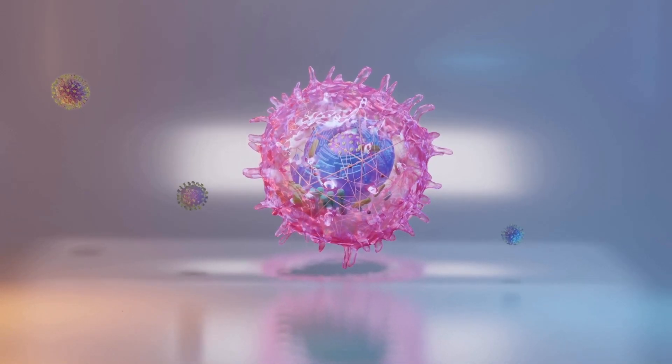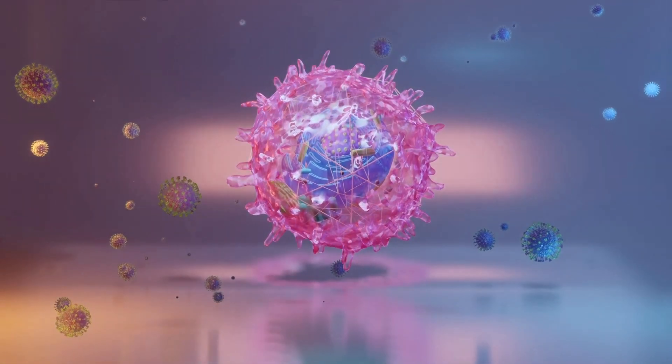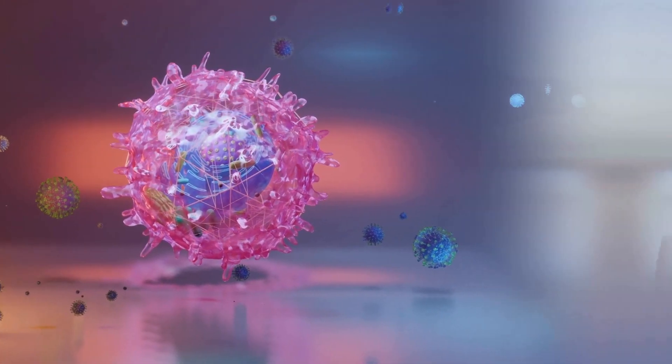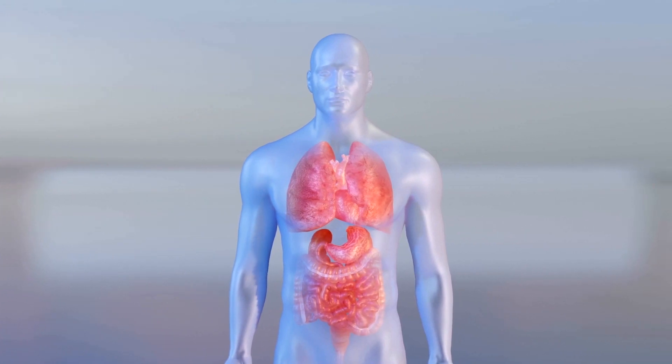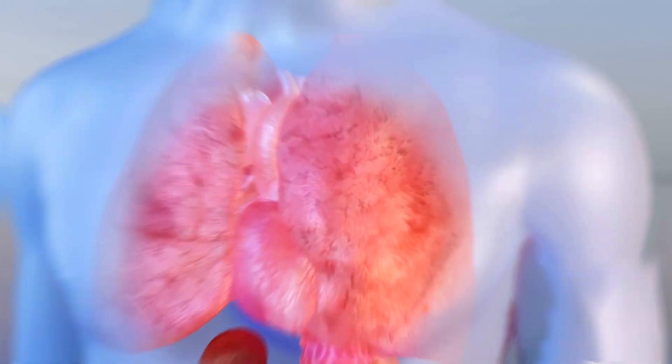Researchers from China have used cryo-electron microscopy to show how SARS-CoV-2 infects humans. The study published in Science says the virus targets a type of receptor found on human cells in the lungs, heart, kidneys, and intestines.